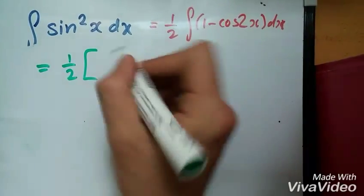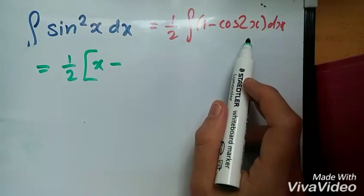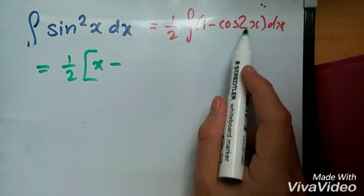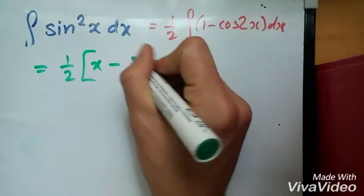The integral of 1 is x. Now integrating cos x reverses to positive sine x. Because you have a 2 inside within the trig, this will go underneath, so sine 2x over 2, and then of course we have to add the constant plus c.